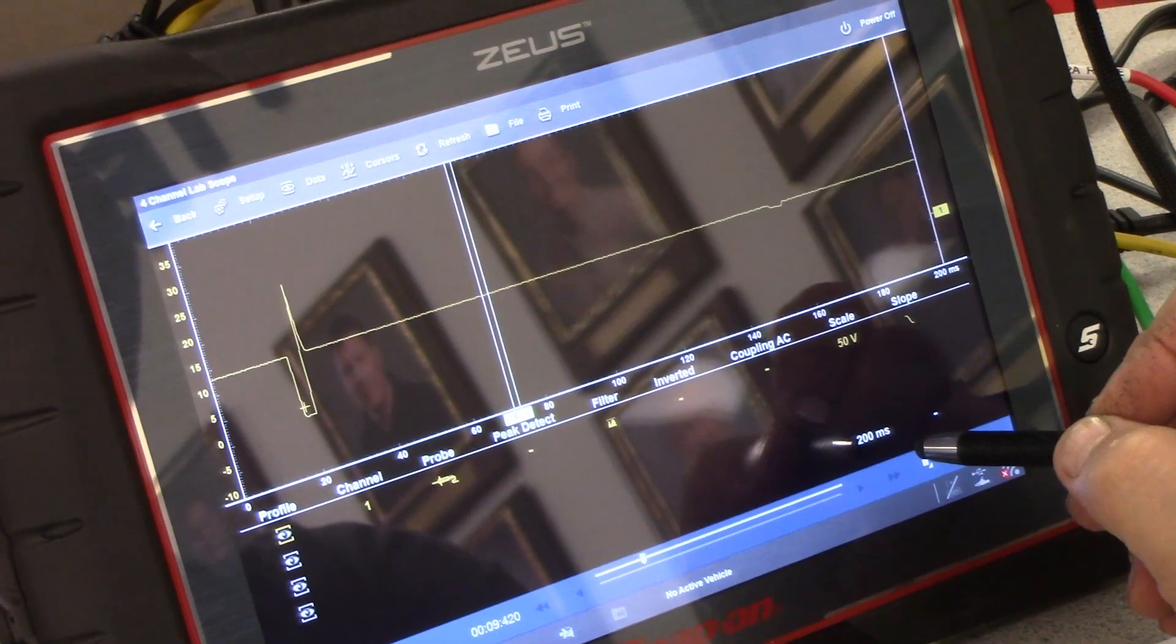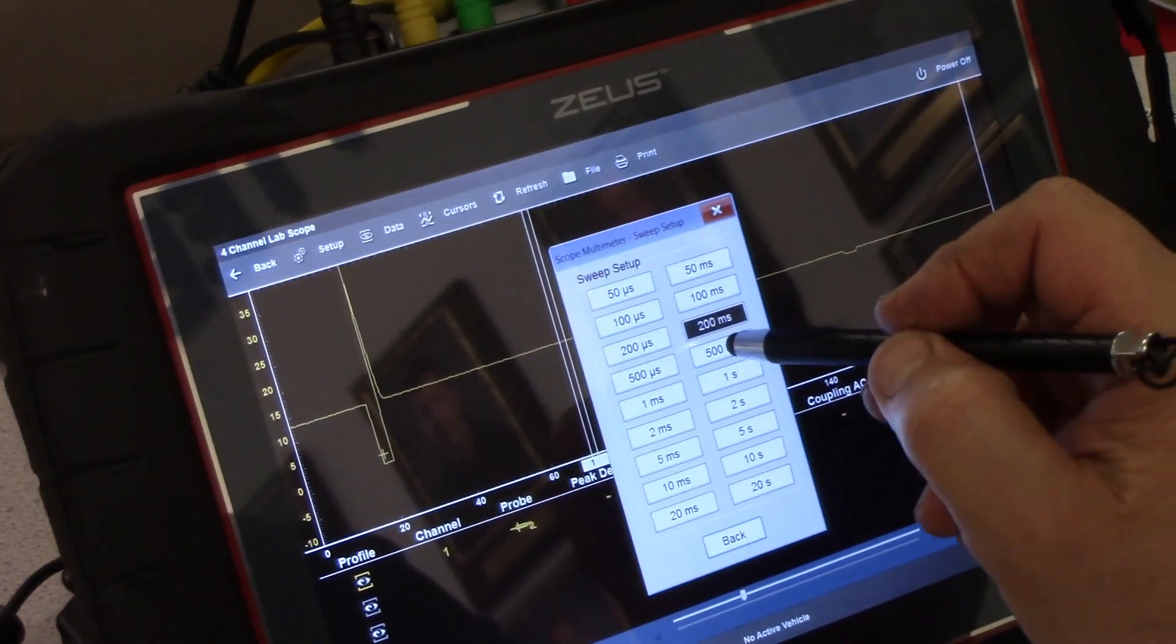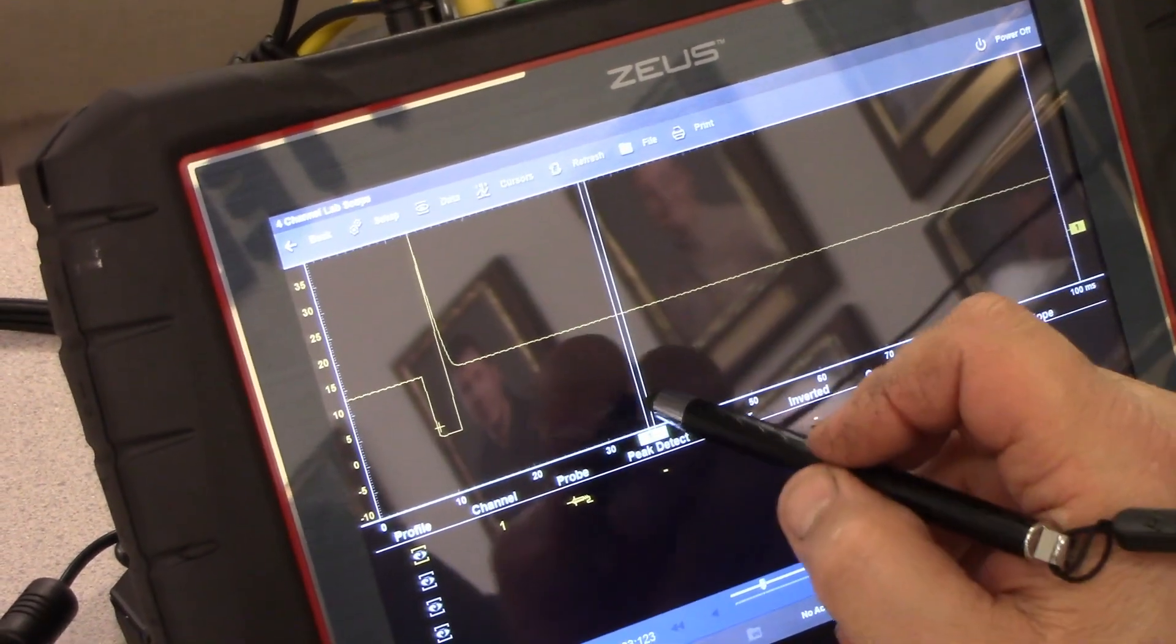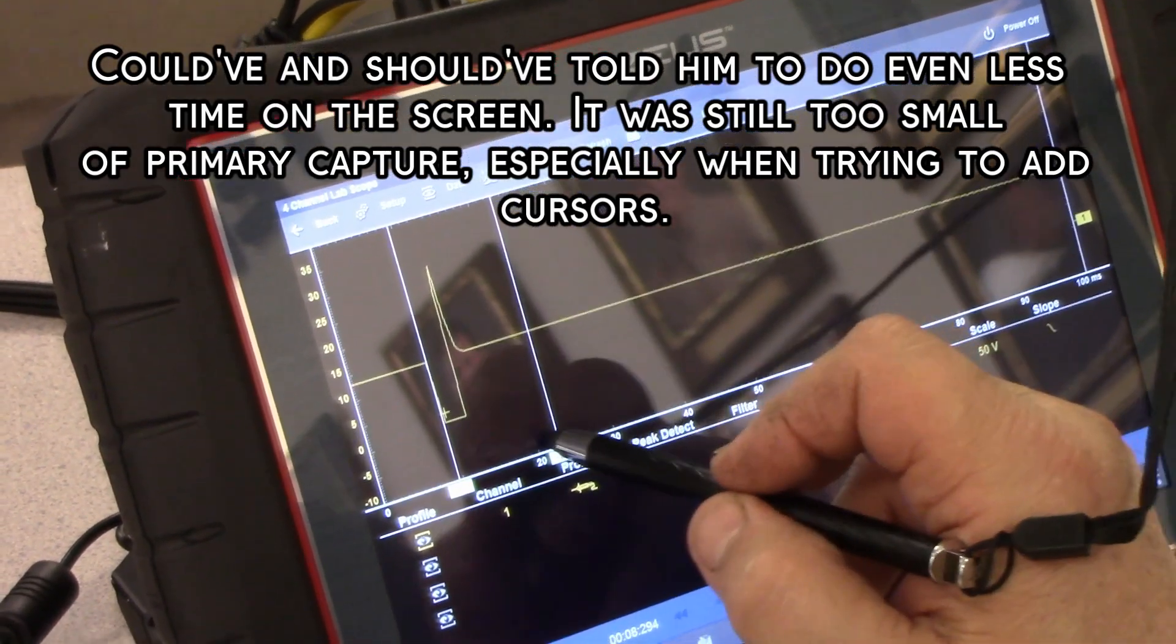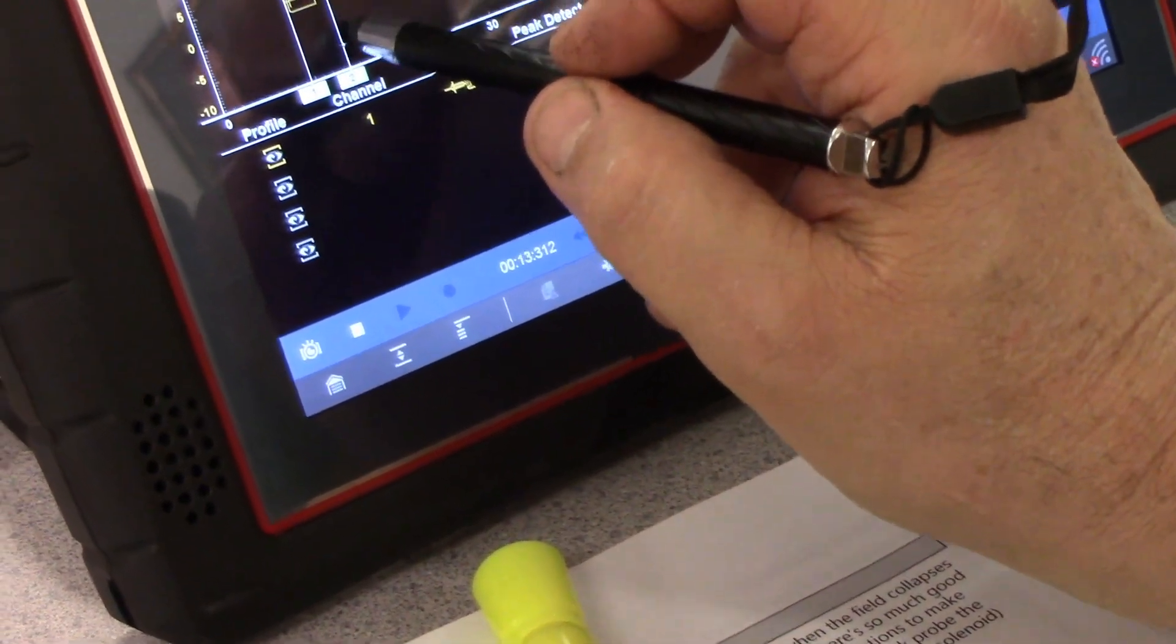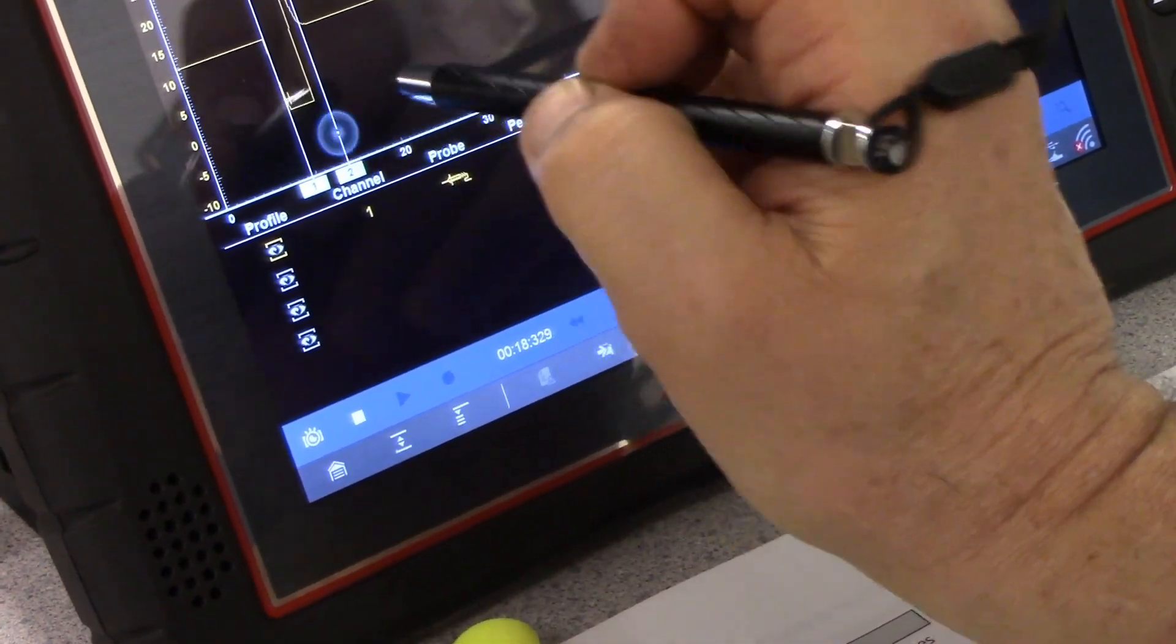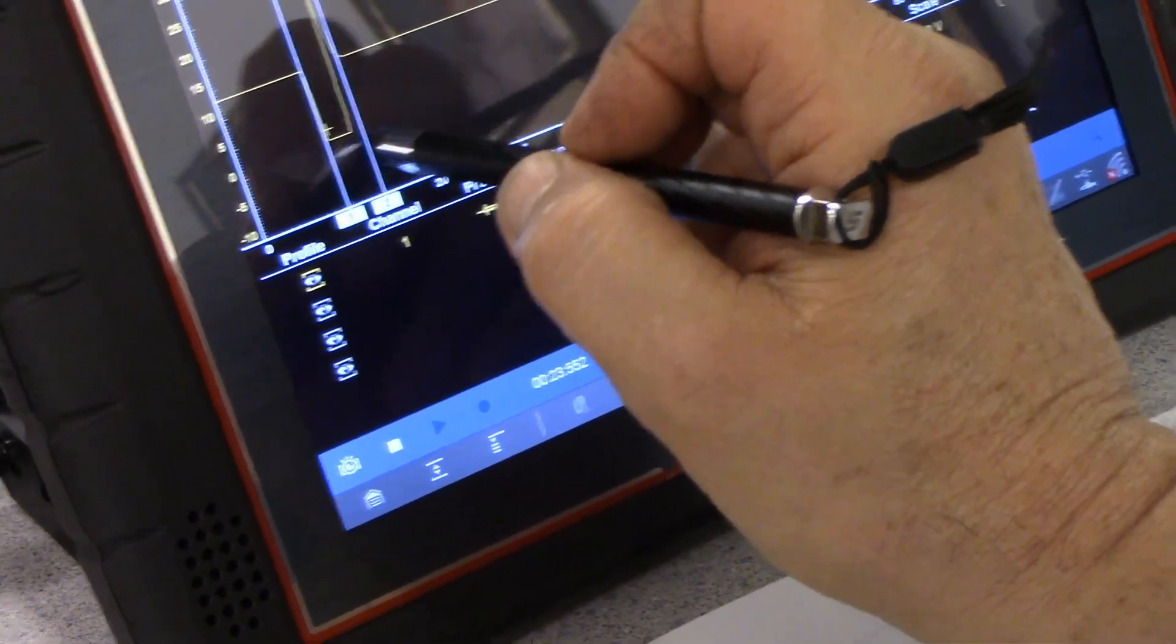200 milliseconds, you think that's enough? That's maybe a little too much. You can put less time and bring a bigger image. Now I can bring the cursor over and measure my whole time. What's your dwell? I'll tell you in a minute. Work the stylus. Try the number two.